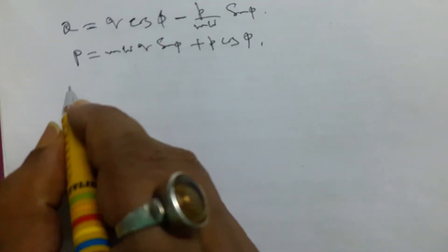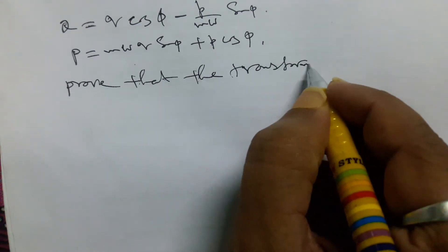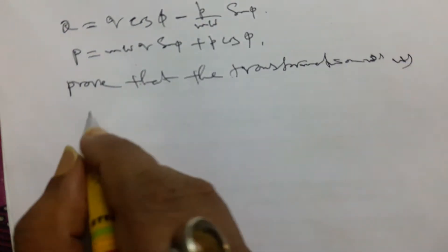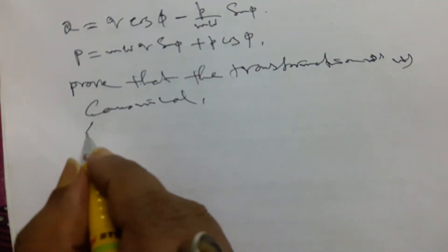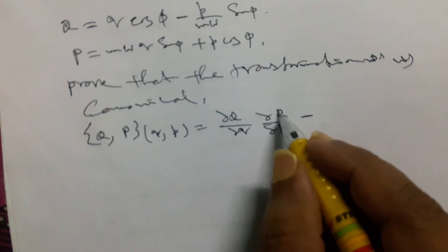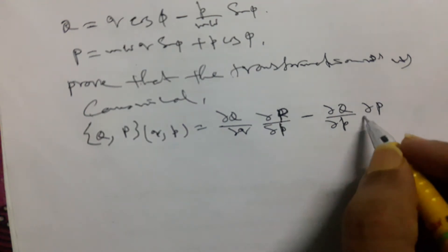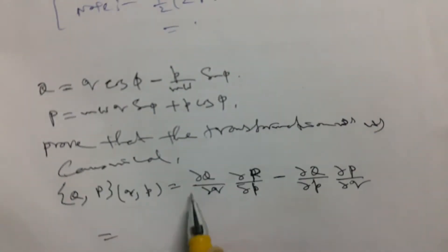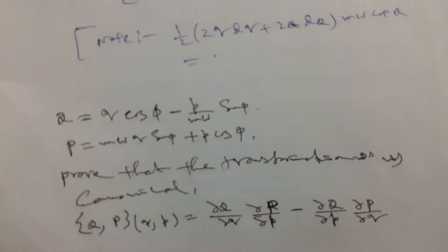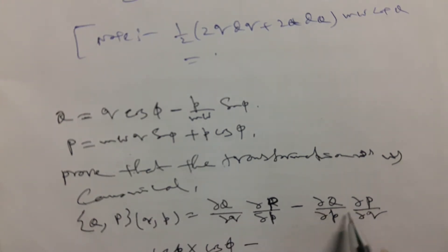Now at first we have to prove the transformation is canonical. To prove this, we have to check the Poisson bracket. So it will be (∂Q/∂q)(∂P/∂p) minus (∂Q/∂p)(∂P/∂q). So we have to find ∂Q/∂q, which will be cos φ, and ∂P/∂p, which will also be cos φ.